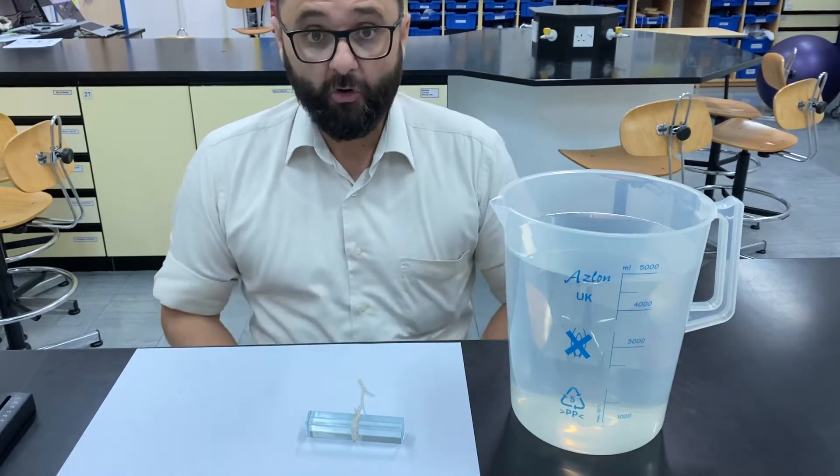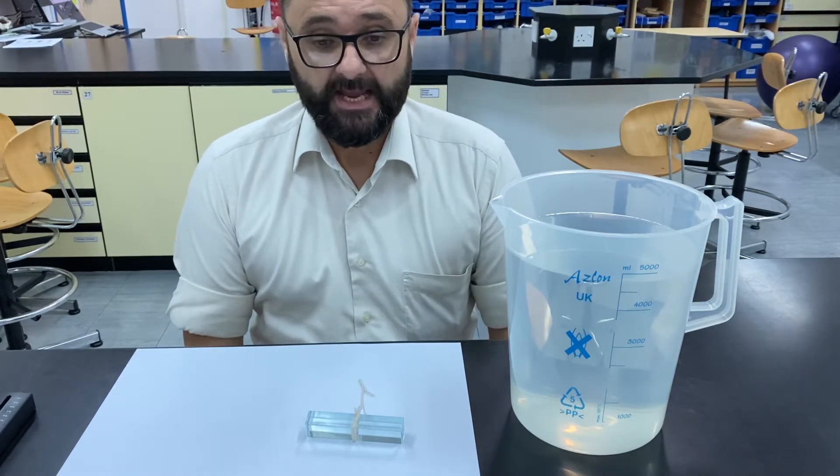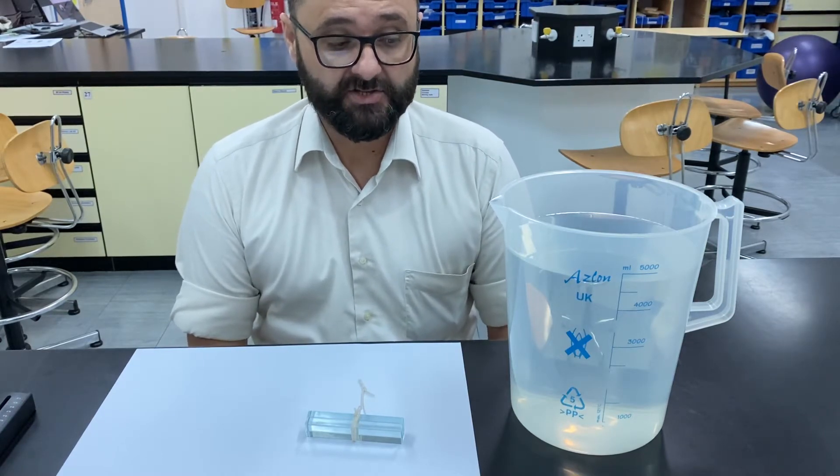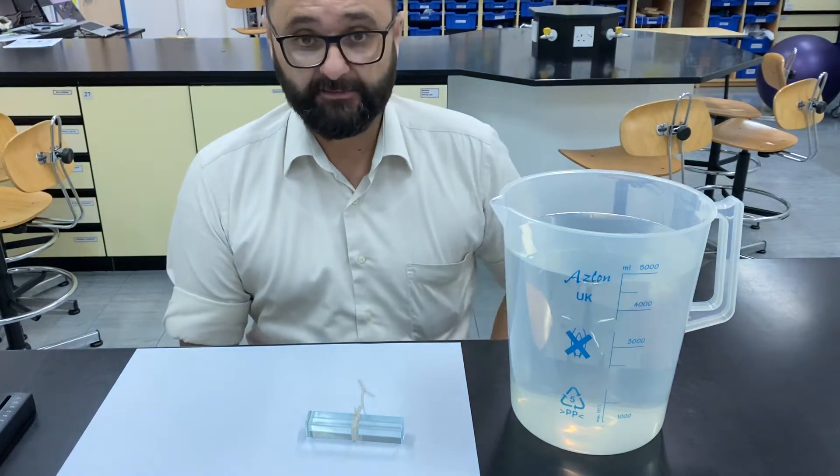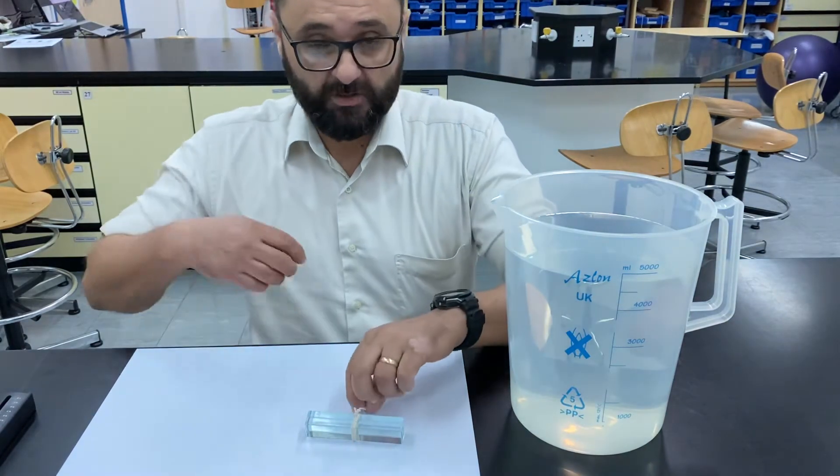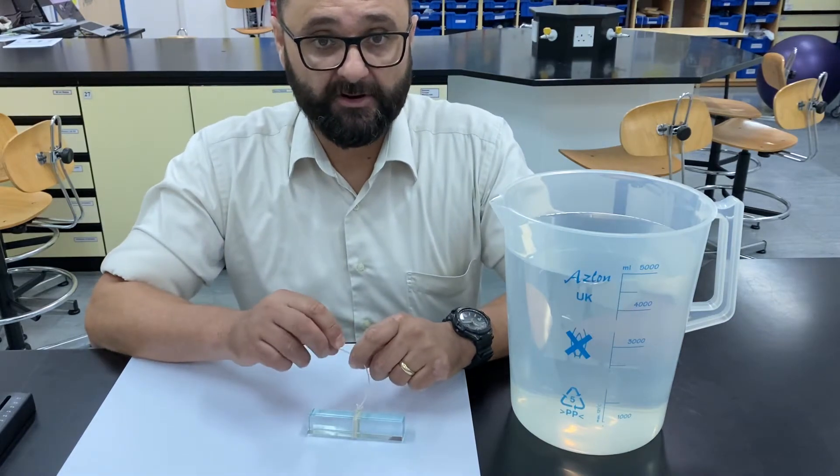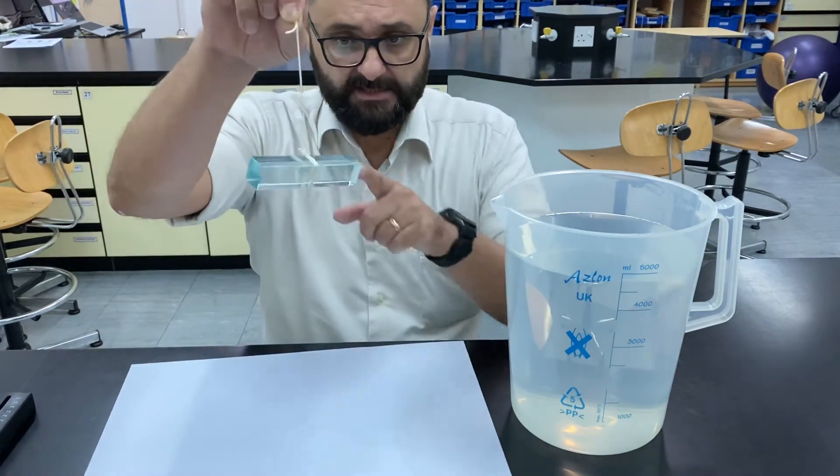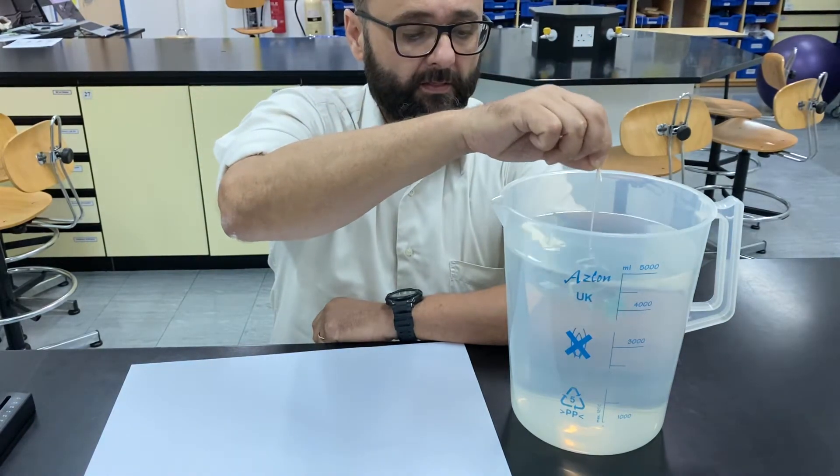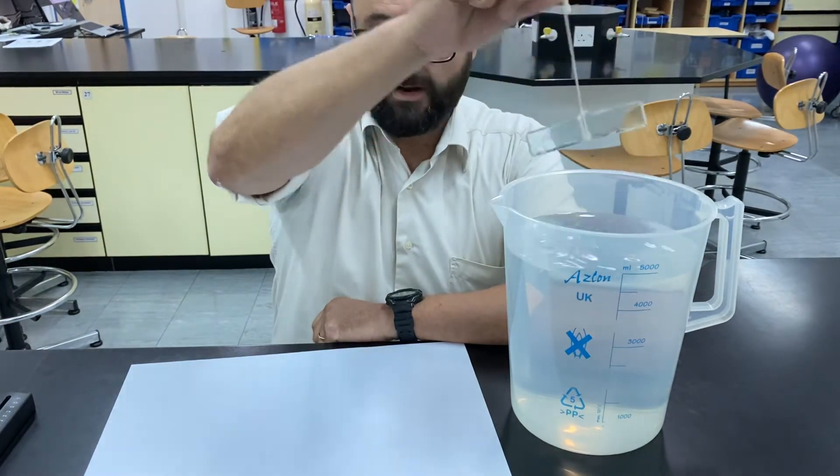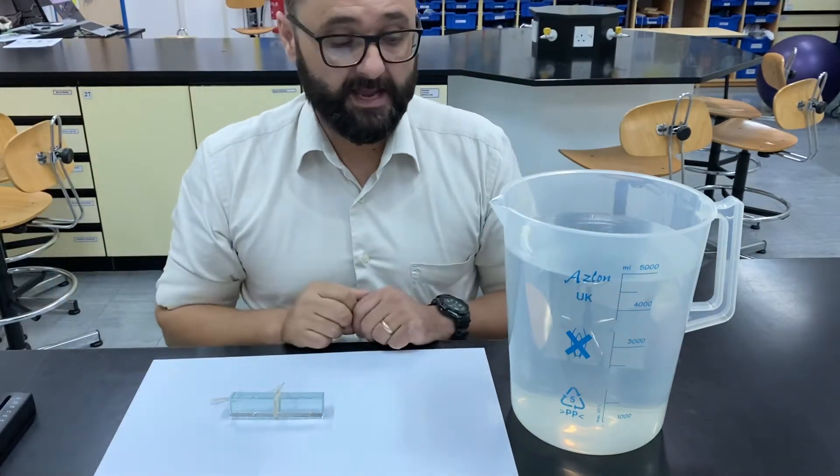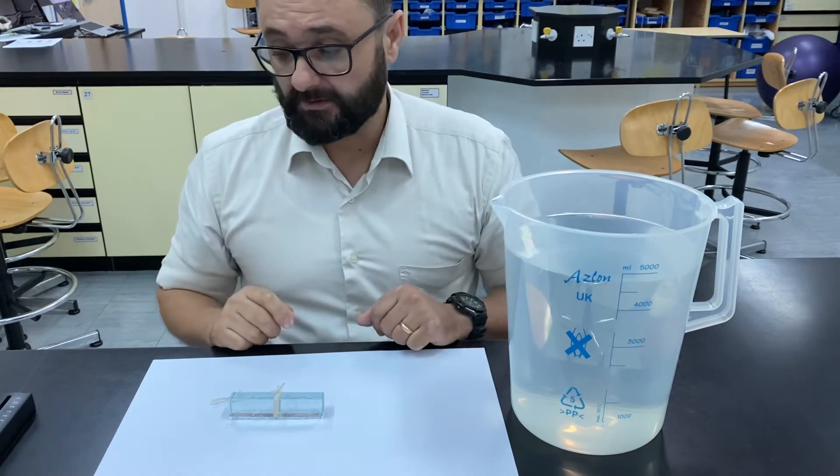Now the thing that causes upthrust is that when things float partially or fully submerged in liquid or any fluid, the object will displace some of the fluid. So in this case we've got a piece of glass, this is the thing we'll investigate. If you put that into the water, that glass block is going to basically displace some of the water.